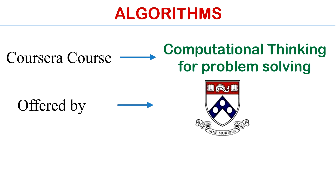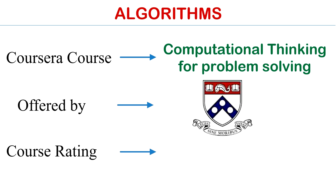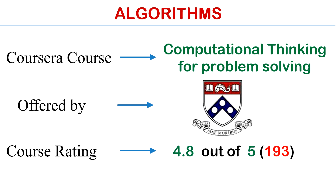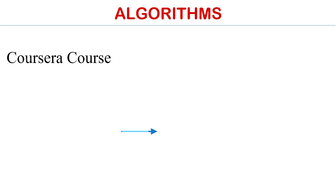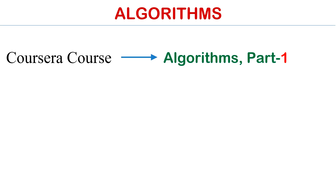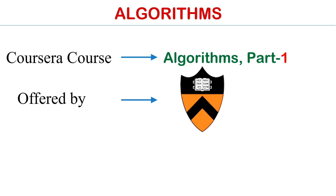Course number four is Computational Thinking for Problem Solving, offered by Penn University. The rating of this course is 5 out of 5 and the price is absolutely free. You can check it out in the description box.